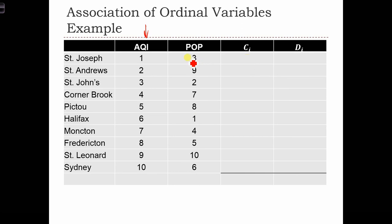So in this case, the ranking for population is 3. And we have 1, 2, 3, 4, 5, 6, 7 observations below this level that have ranks higher than 3. In this case, the rank is 9, and we only have 1 observation that has a higher ranking. Here the ranking is 2. We have 1, 2, 3, 4, 5, 6 observations.